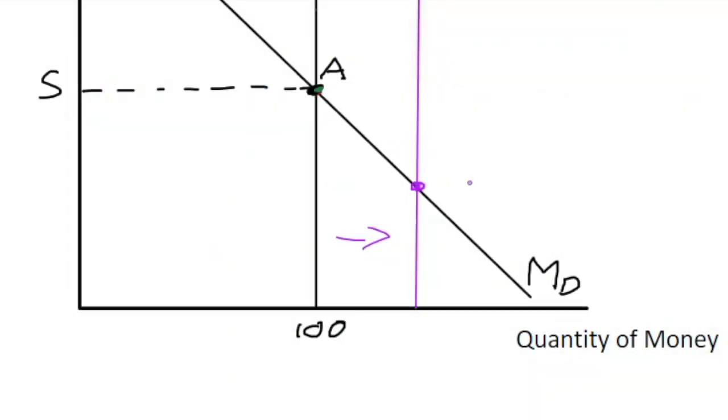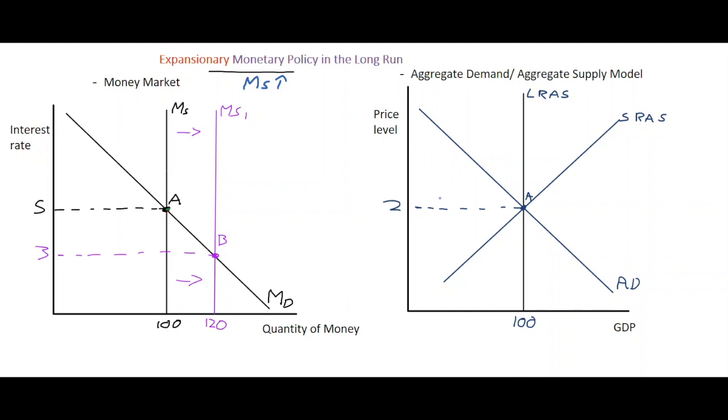...of five down to an equilibrium interest rate let's say of three percent. And at the same time the quantity of money in the economy has increased. So what happens over on the right-hand side in the real economy? Well, what happens over here is at the exact same price level we have an expansion of aggregate demand.